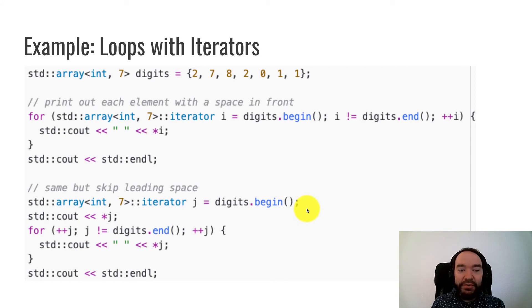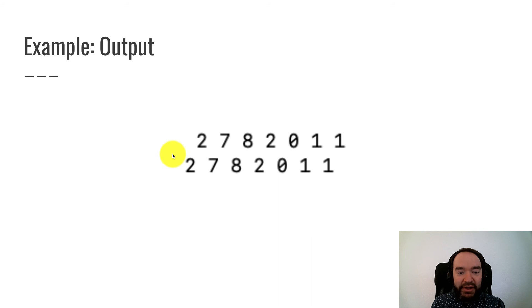Okay, here's an example of loops using iterators. So up here, I create a standard array of seven ints called digits that holds 2782011. This is a previous example of the phone number of our school. And here's a for loop that prints out all of the elements. So this declaration is a little unwieldy, but standard array iterator i starts at digits.begin. As long as i is not equal to digits.end, we do i plus-plus, and print out a space, and then i, and then an endl at the end. So if we look over here, here's the output of that for loop.